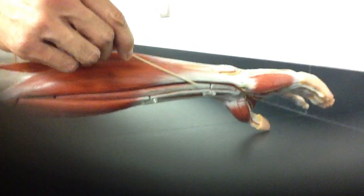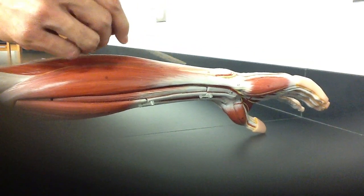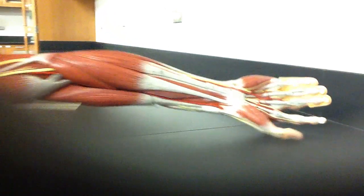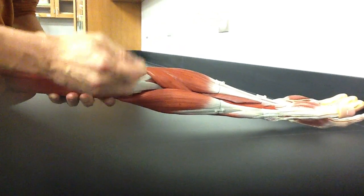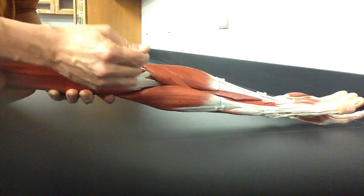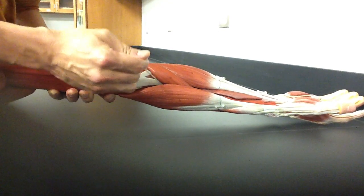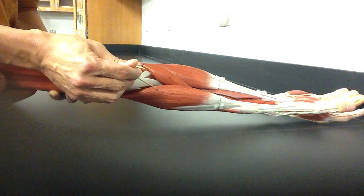So anything towards the palmar side is going to be flexor. Anything on this other side is going to be extensor. And then this other one, the brachioradialis, you'll notice that all of a sudden it jumps across this antecubital fossa. In order to jump the gap, you have to go on to the other side. You have to be on the extensor compartment.